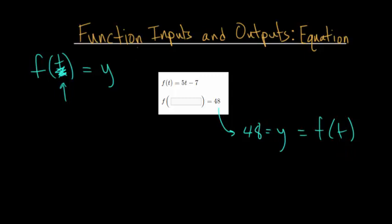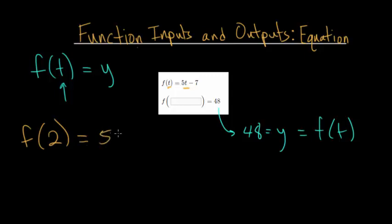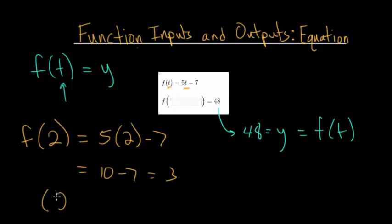Usually you might see it the other way around, where you have the input value — say f(2) — and you need to figure out what the function value or y value is. With these problems it's more straightforward: anywhere you see a t, you replace it with whatever is on the inside, in this case 2. So instead of 5t you get 5 times 2 minus 7, which is 10 minus 7, which is 3. So when you plug in 2 to this function it has a y value of 3.